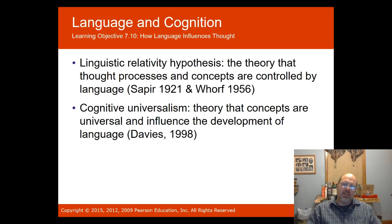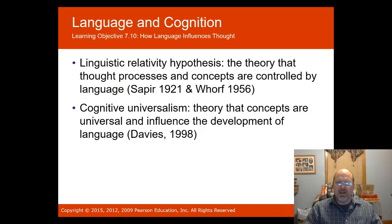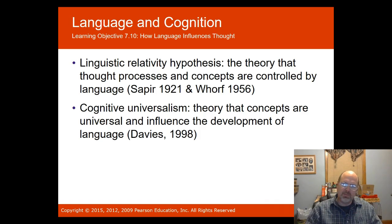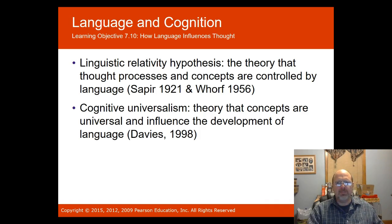The linguistic relativity hypothesis, based on the Sapir-Whorf hypothesis, says that thought processes and concepts are controlled by language — language influences our thoughts and our words are used to think about the world. For example, the Hopi tribe did not have a future tense in their language, which shaped their perception of reality. Also consider old terminology like 'invalid' for someone unable to care for themselves, or references to Native Americans as 'savages' — words matter because they affect our worldview.